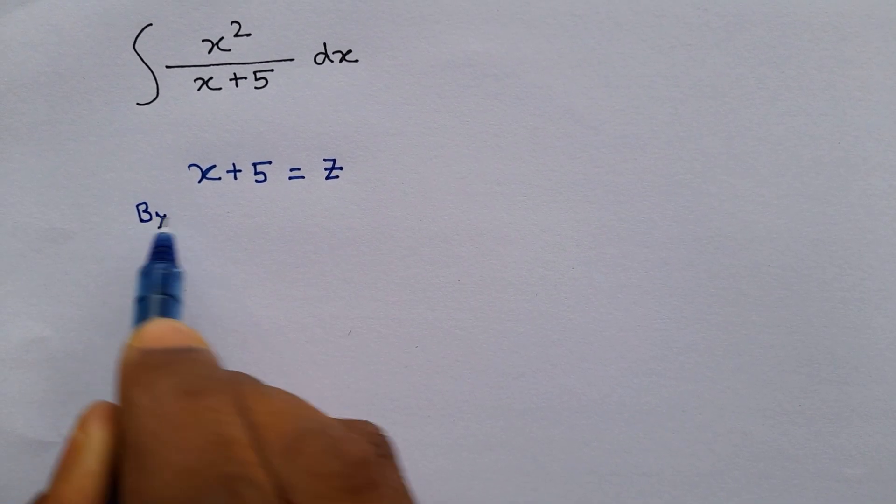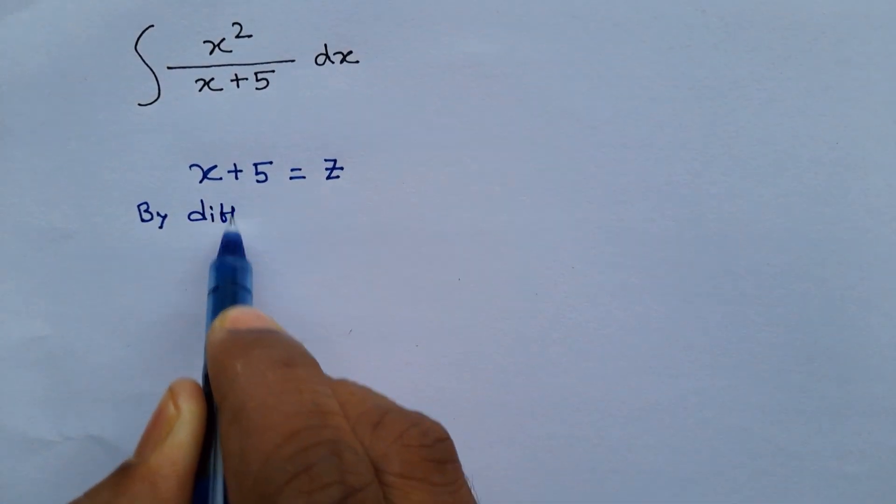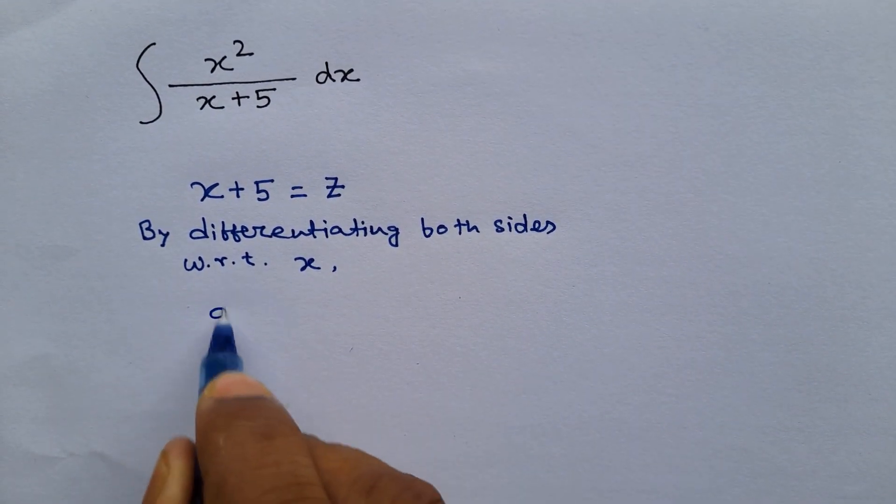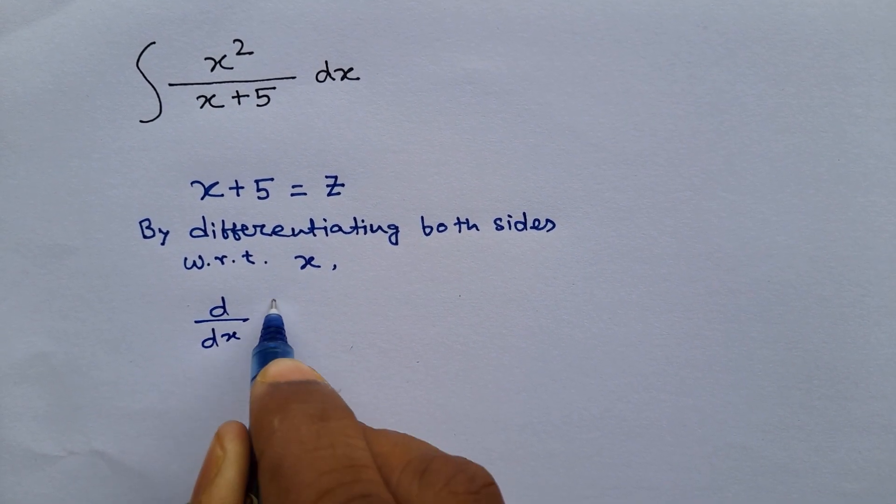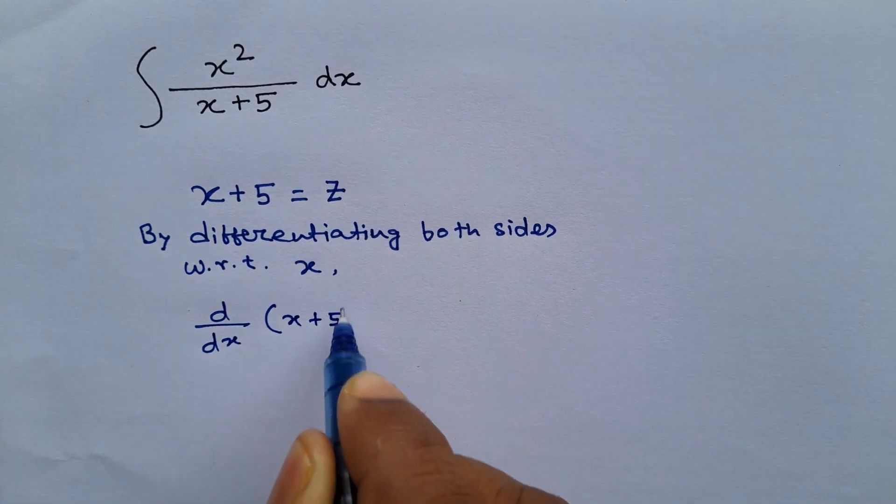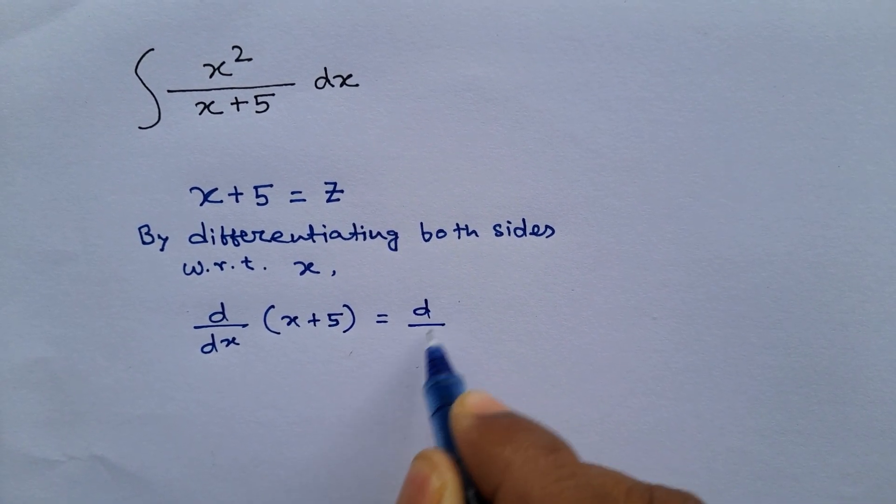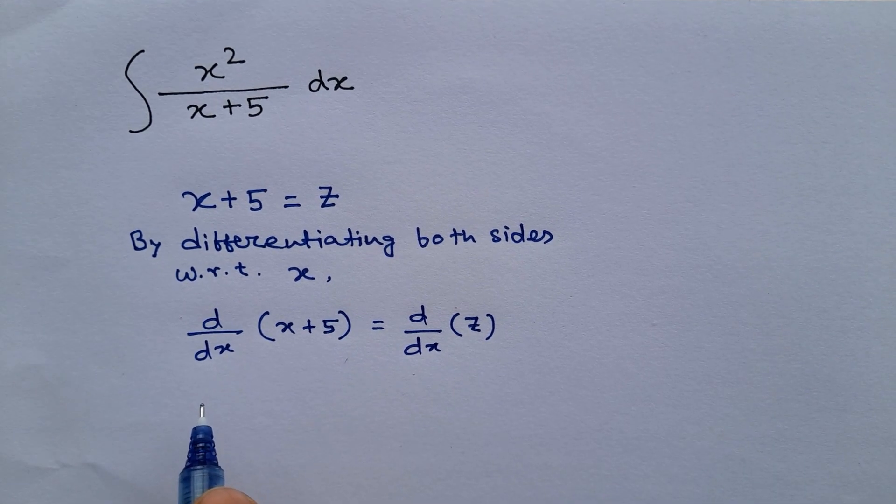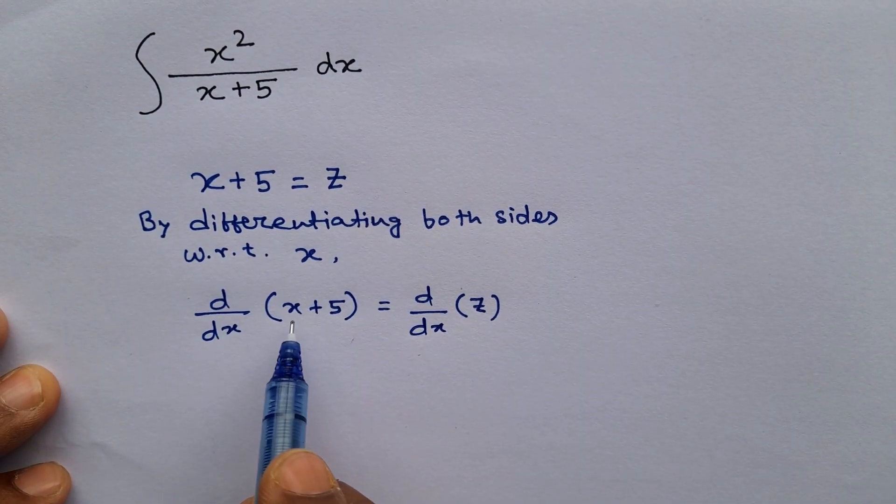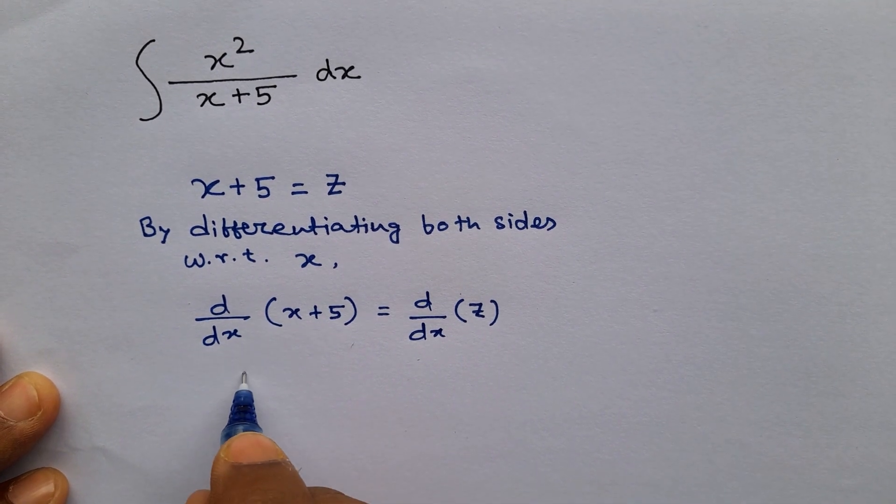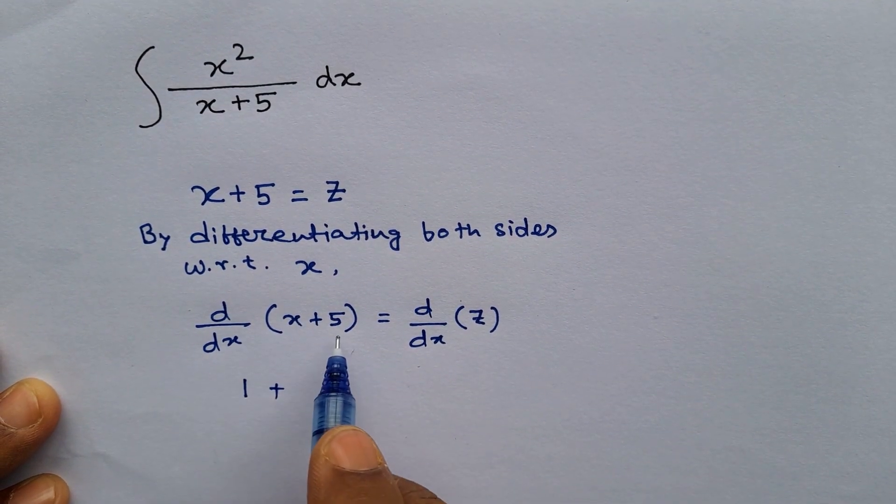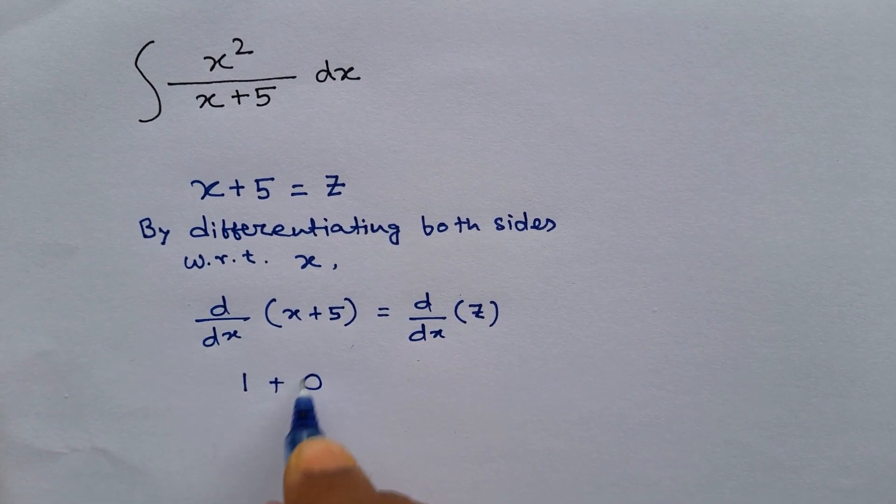Now we will differentiate both sides with respect to x. What we get here is d/dx of x plus 5 equals d/dx of z. The first term d/dx of x becomes 1 plus d/dx of a constant term becomes 0.